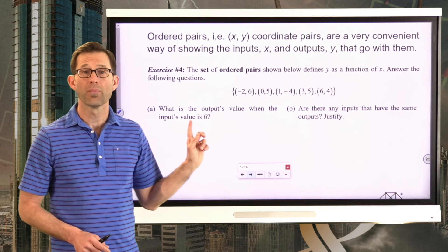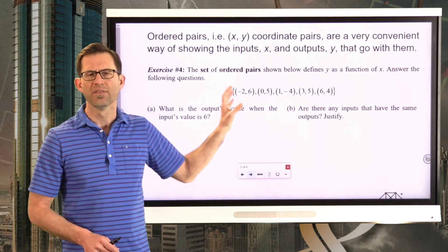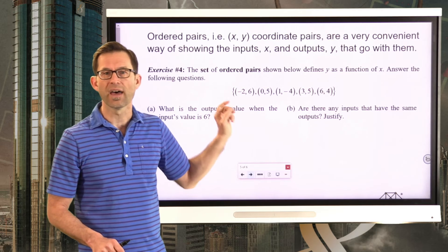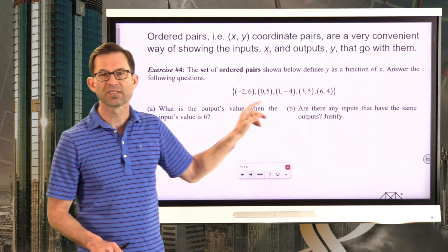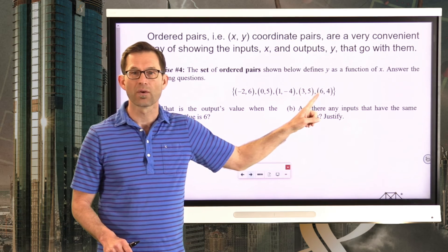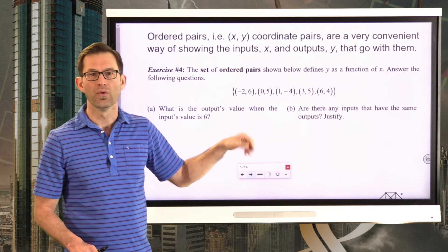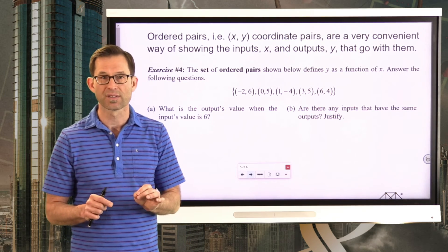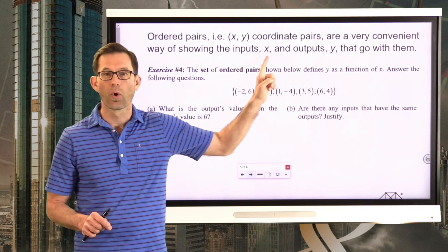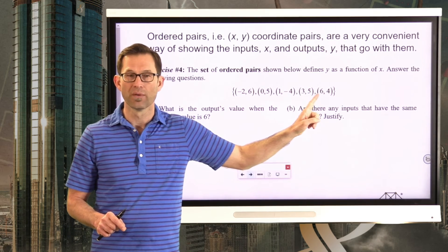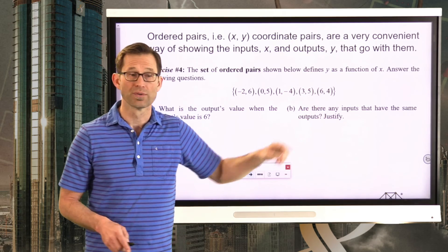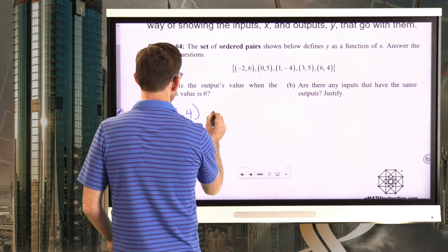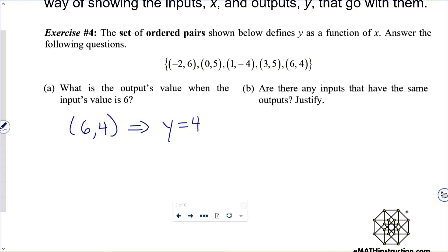All right, I'd like you to pause the video for a moment and tell me what the output value is when the input value is 6. Now, this is important. We know that the input value is 6, so we scan this set of ordered pairs. And I see a 6 sitting right there, and I see a 6 sitting right there. So is my answer negative 2, or is my answer 4? Well, remember, the input is 6, and the input is the x-coordinate. So that's the one that has an input of 6, and its output is y equals 4.